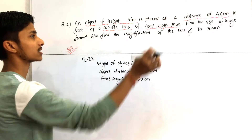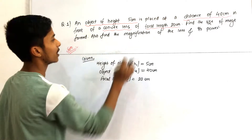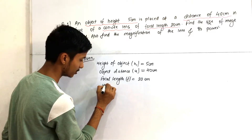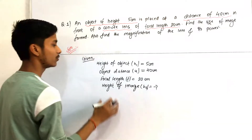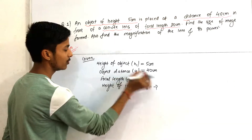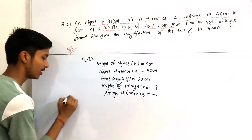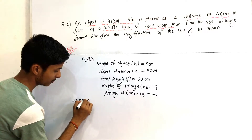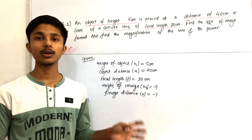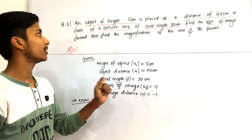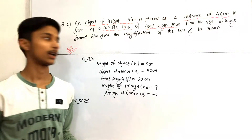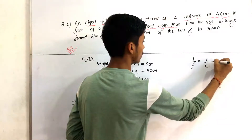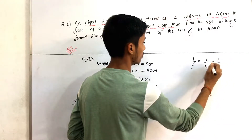We have to find the size of image formed, that is the height of image, and the image distance v. The relation between focal length, object distance, and image distance is given by the formula: 1/f = 1/u + 1/v, where f is the focal length, u is the object distance, and v is the image distance. This formula is applicable for both convex and concave lenses.